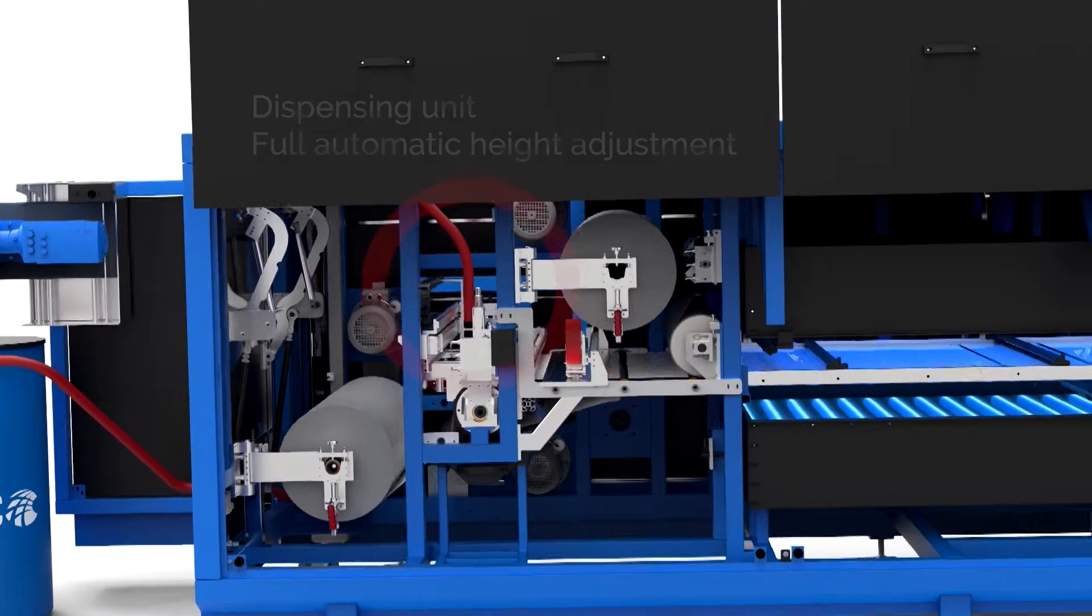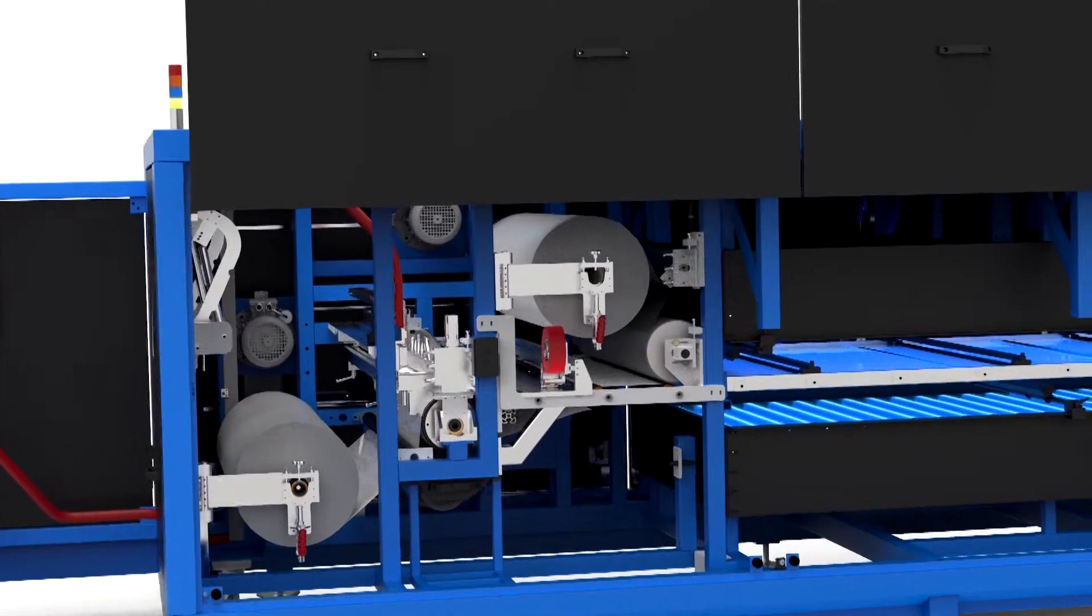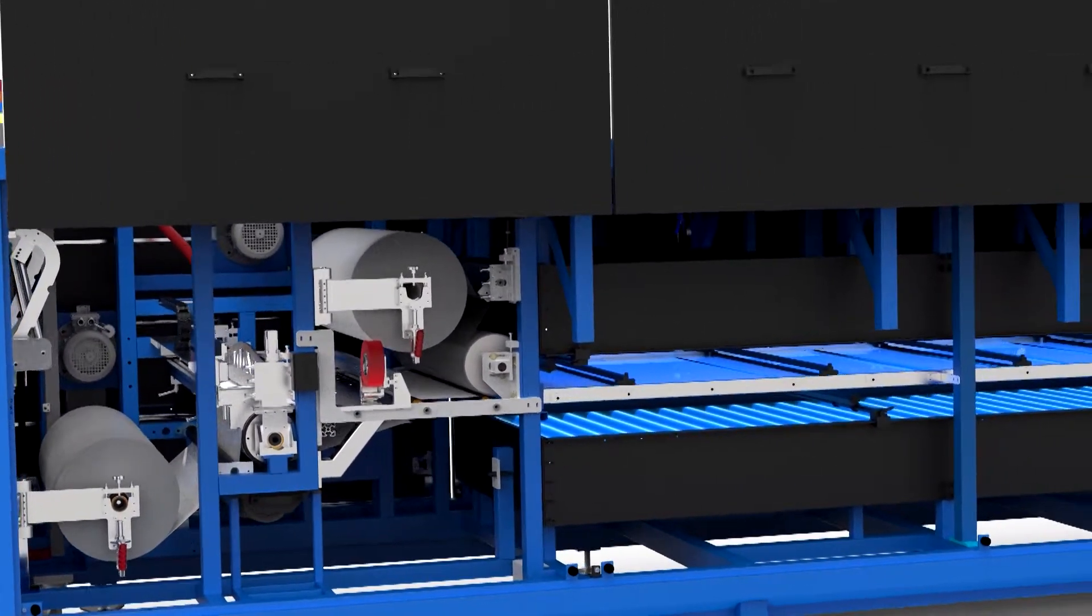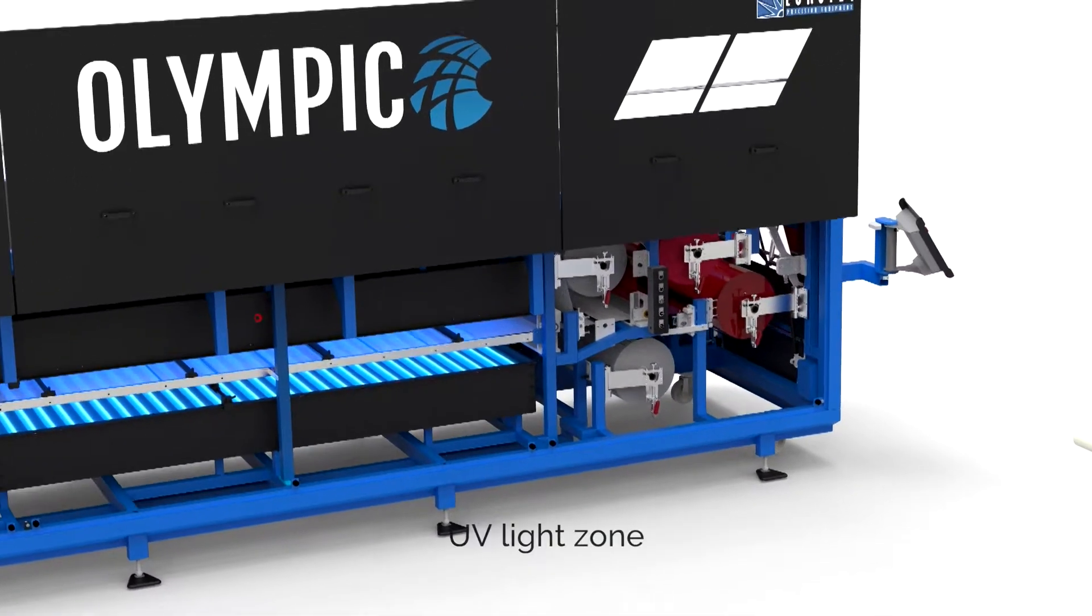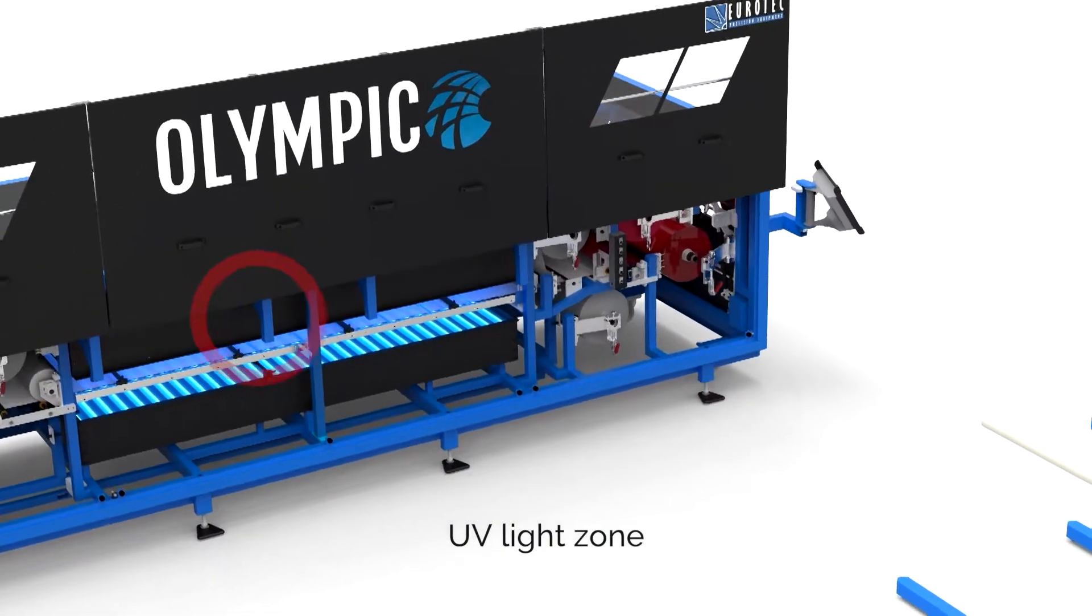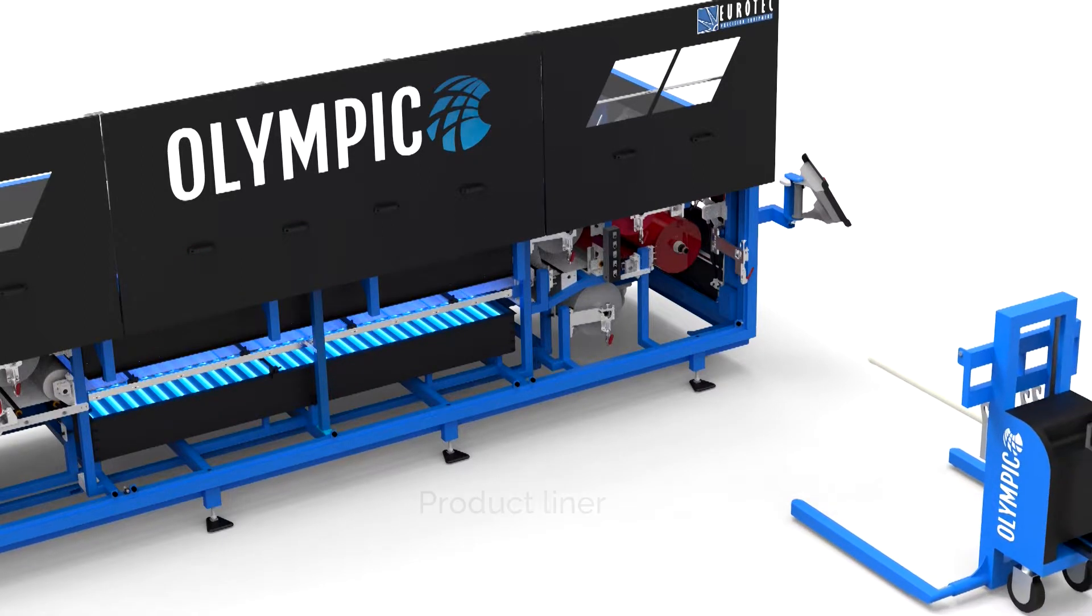You can produce the entire Olympic range, including customized solutions, all solvent-free and sustainable. You can even brand your own products. The Olympic UV coater is factory-supported with product development, service, and maintenance by Olympic.